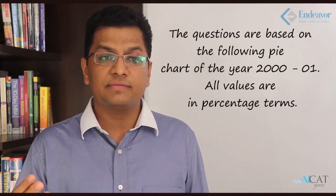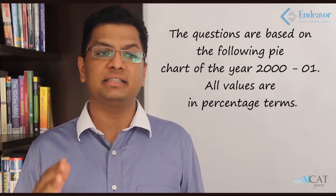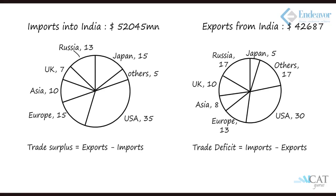Let's have a look at an example and try solving it. The questions are based on the following pie charts for the year 2000-2001. All the values are in percentage terms. Two pie charts are given: first one imports into India which is 52,045 million, and exports from India which is 42,687 million. You have share of various countries on both sides.